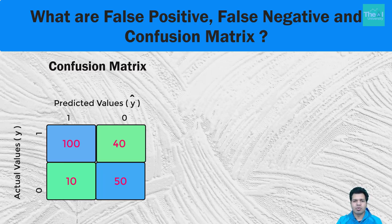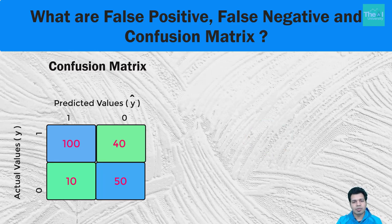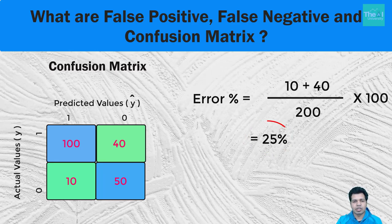Based on this matrix, we can calculate accuracy as total correct observations divided by total observations. Here, accuracy = (100 + 50) / 200 = 75%. The error percentage = (10 + 40) / 200 = 25%.